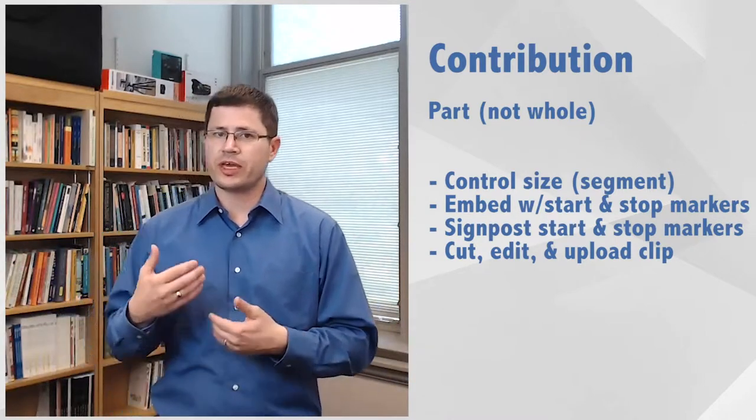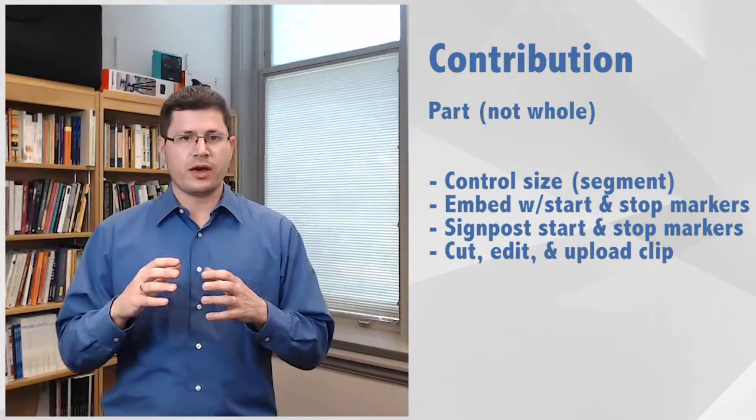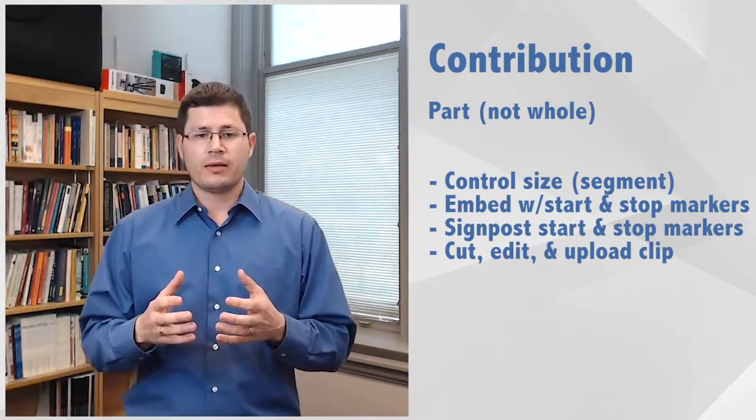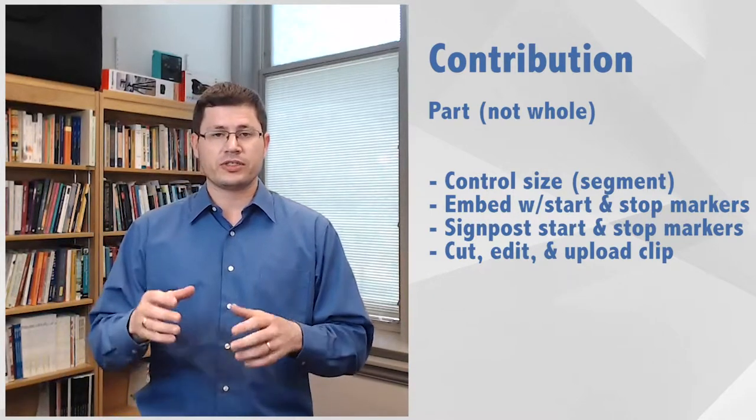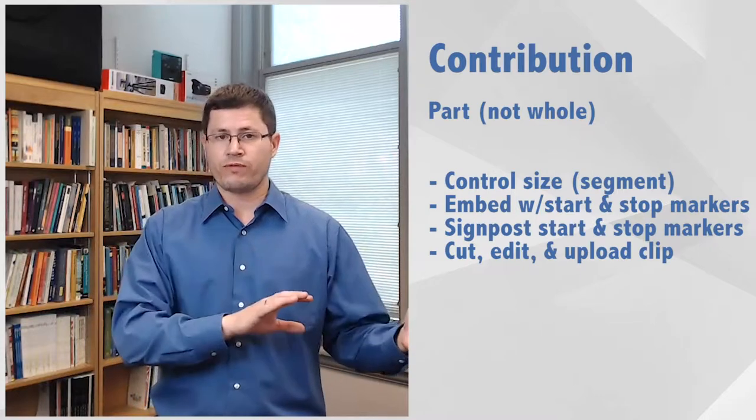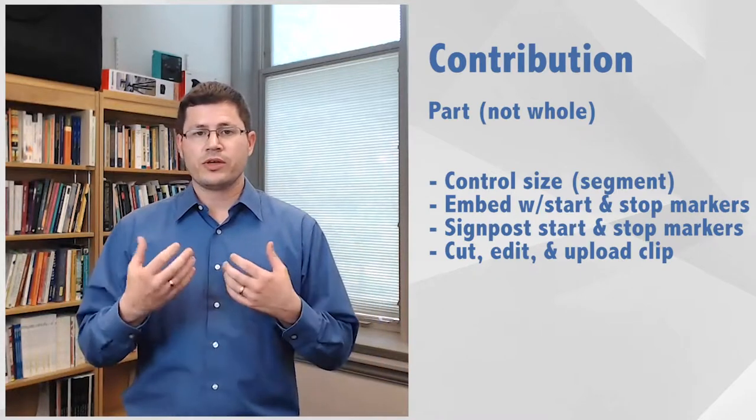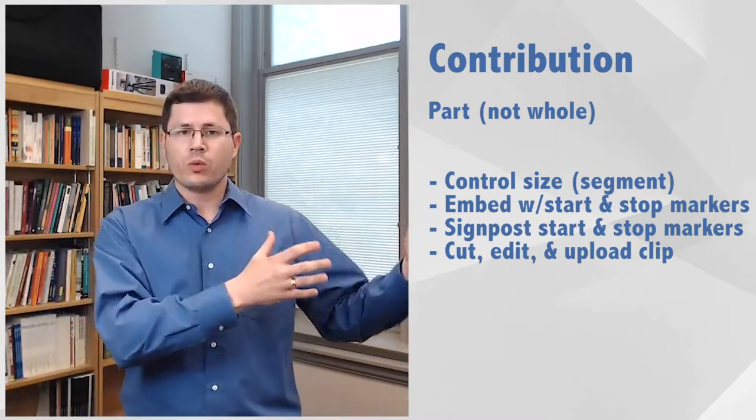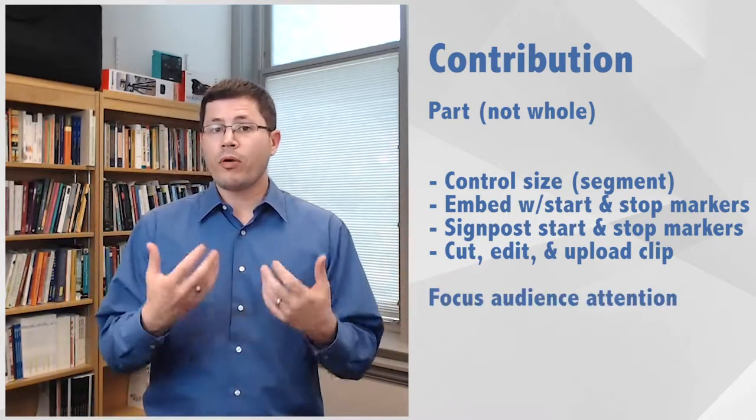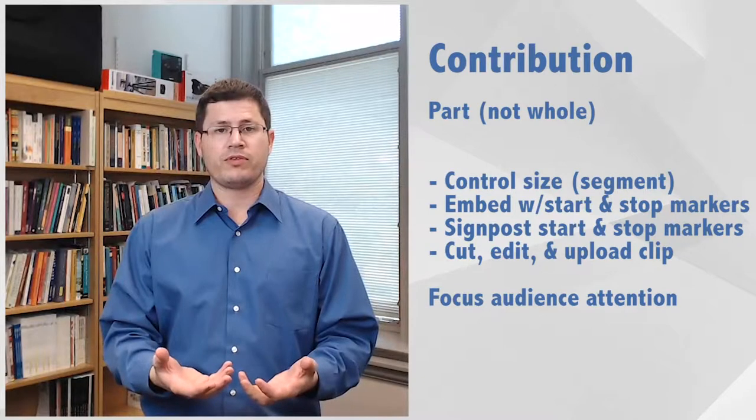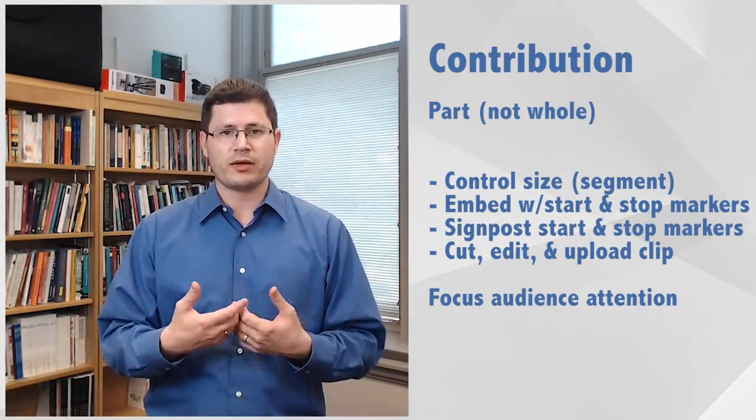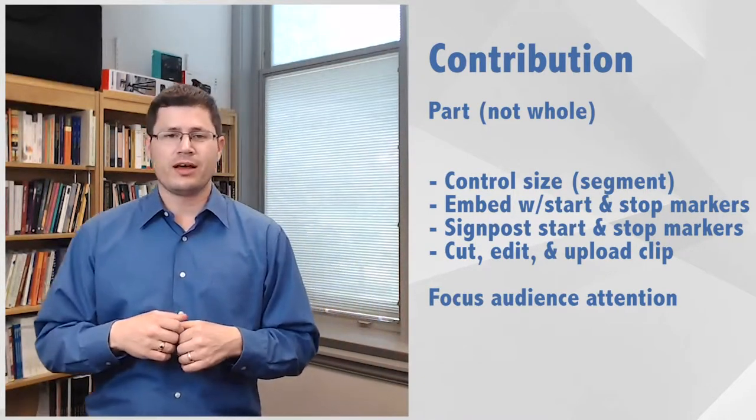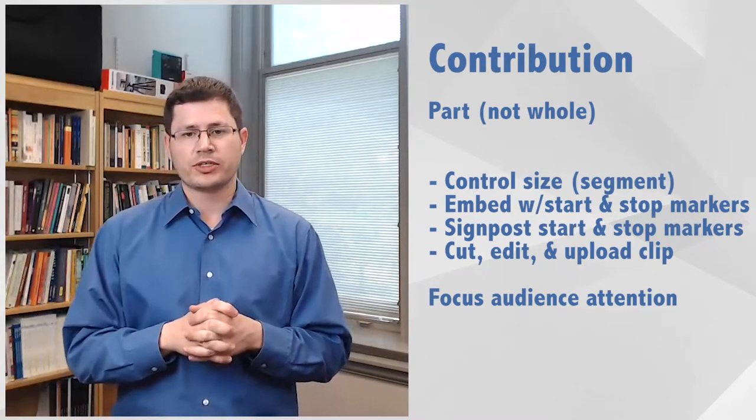Or if you don't have those options or you can't figure out how to make the technology do the auto-embed play structure, then you can signpost it in the text. You can just say in the video below, if you watch from 114 to 227, you'll see X, Y, and Z. So it's a matter of making sure the audience knows not only where the video comes from, but what part of it they need to focus on. And if you can't control that technically or computationally, then we want to give people verbal and visual cues for what they should be watching.